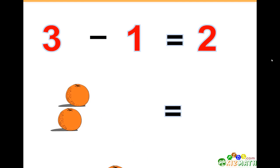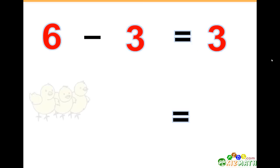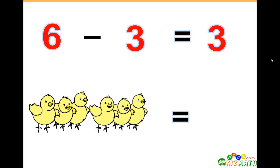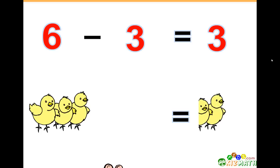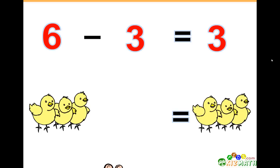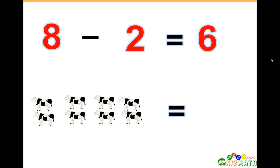3 minus 1 equals 2 — if we have three oranges and we take away one orange, we only have two oranges left. 6 minus 3 equals 3 — we have six birds; if we take away three of those birds, there are only three birds left.